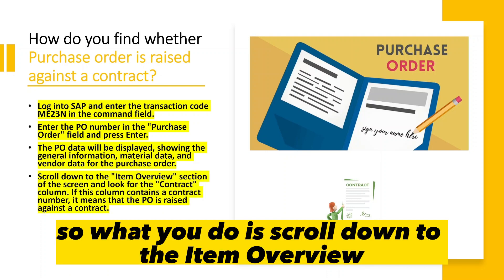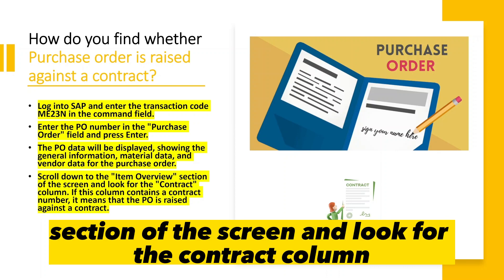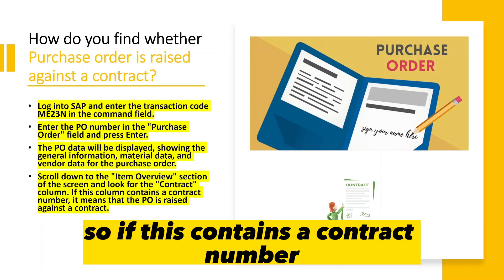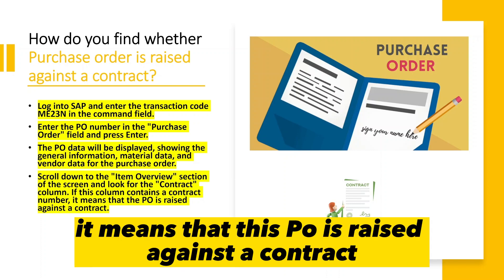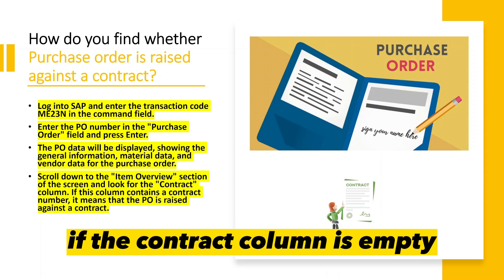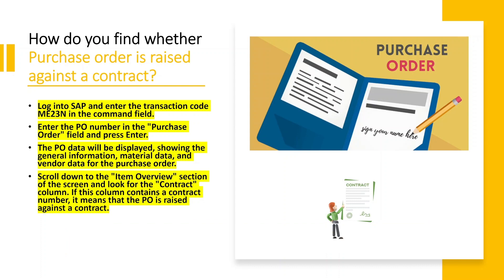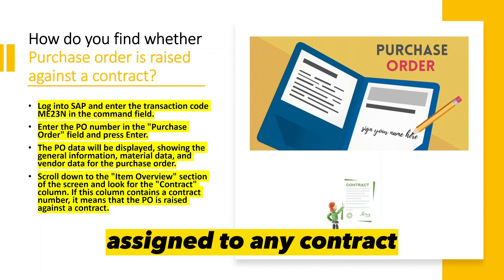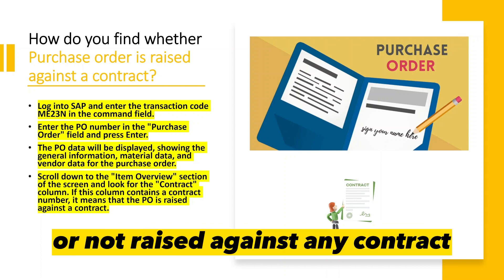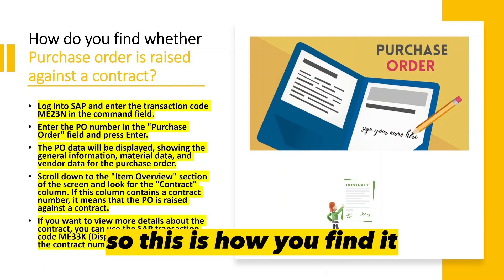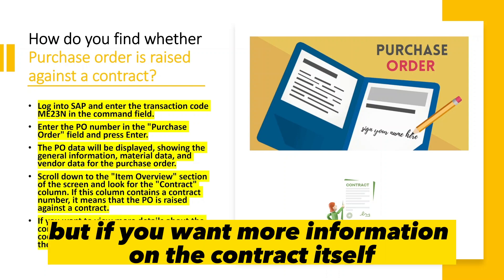Scroll down to the item overview section of the screen and look for the contract column. If this contains a contract number, it means that the PO is raised against that contract. If the contract column is empty, it means the PO is not assigned to any contract or not raised against any contract.